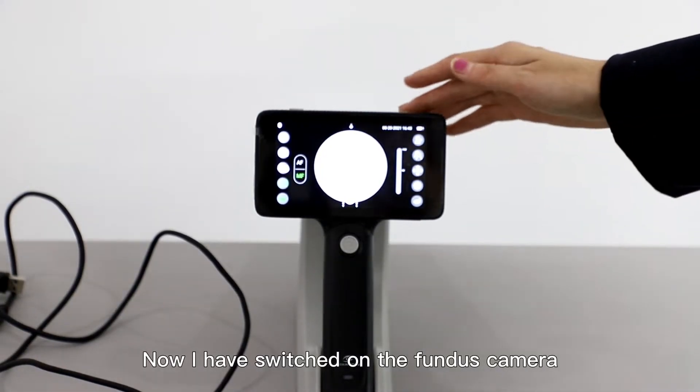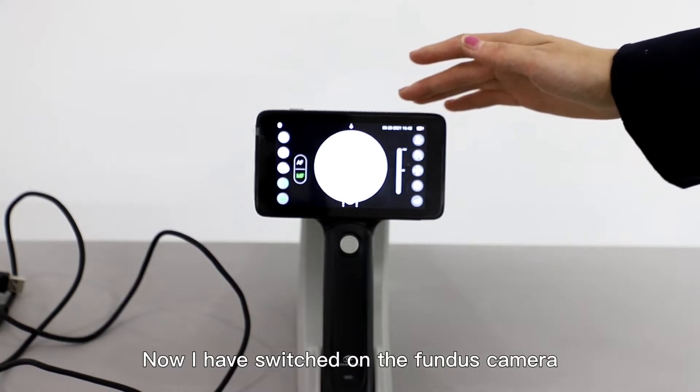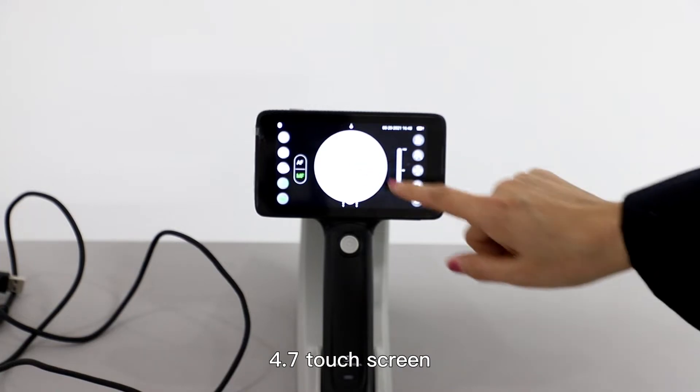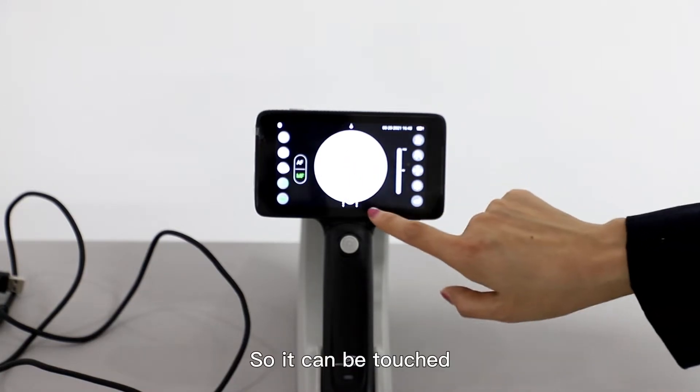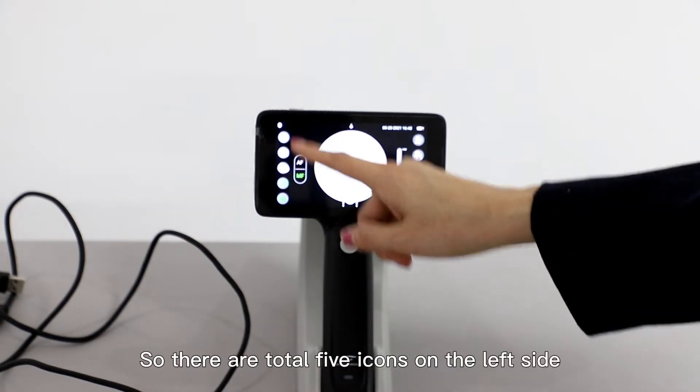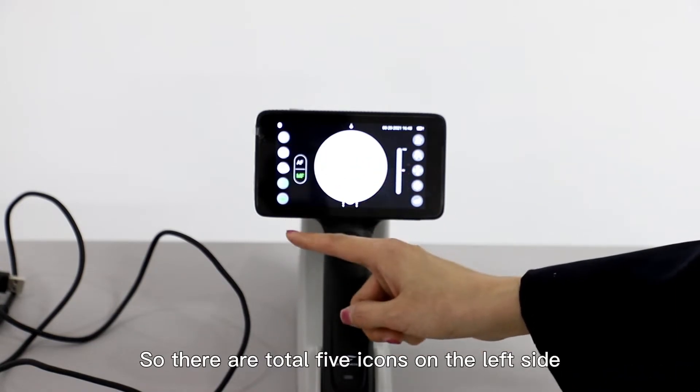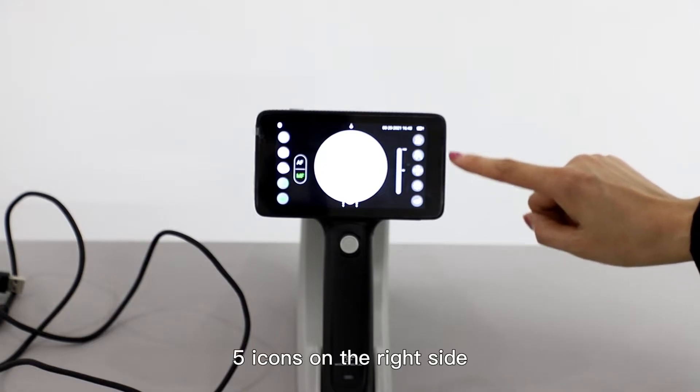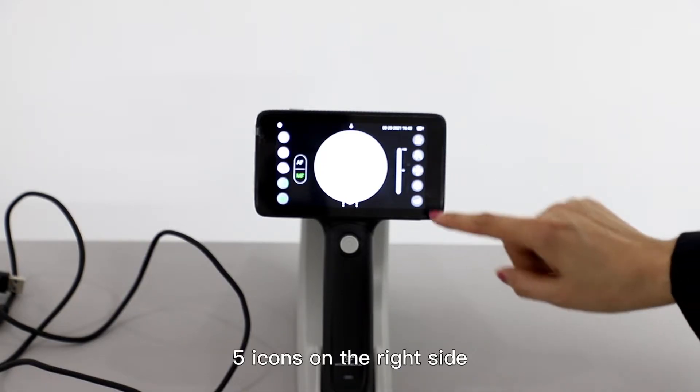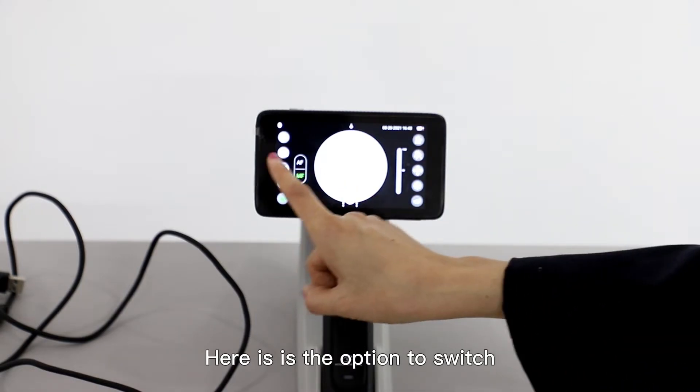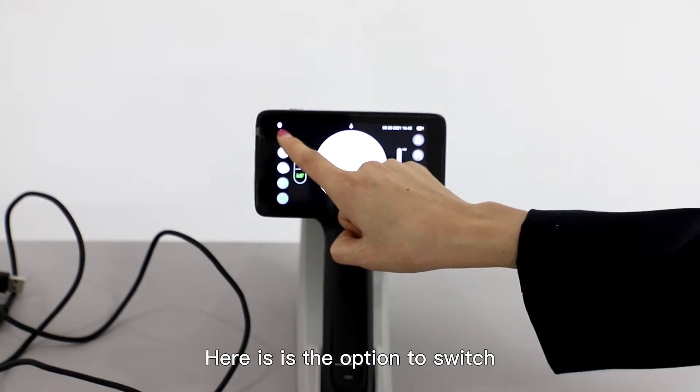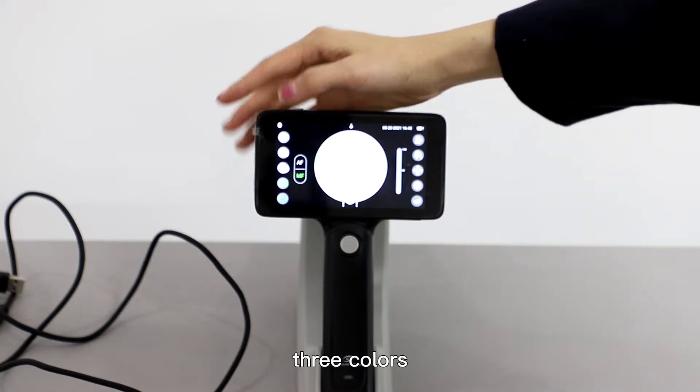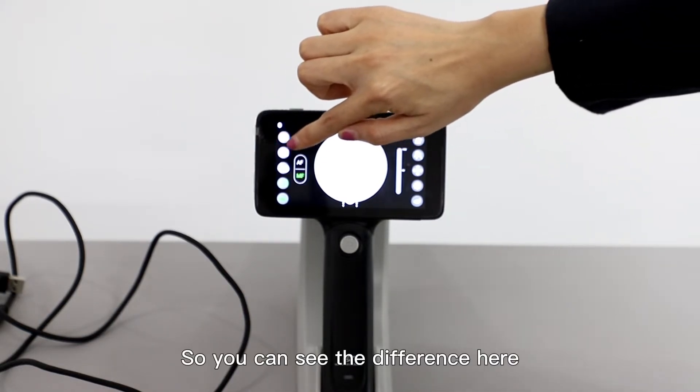Now I've switched on the Fender's camera FC200. Here is the 4.7 touch screen, which can be touched. There are five icons on the left side and five icons on the right side. First, here is the option to switch between three color modes. You can see the difference here.